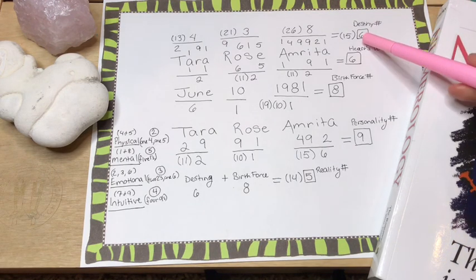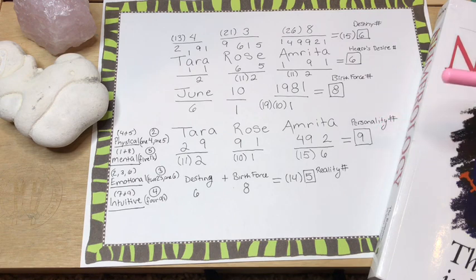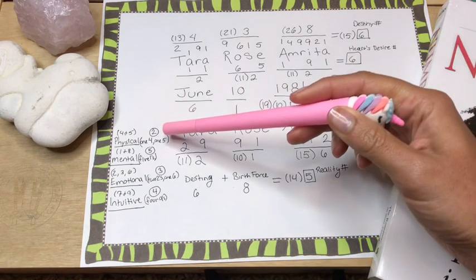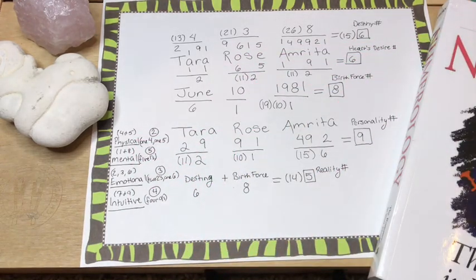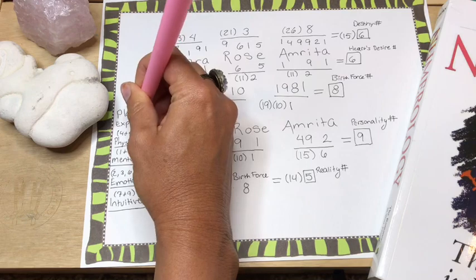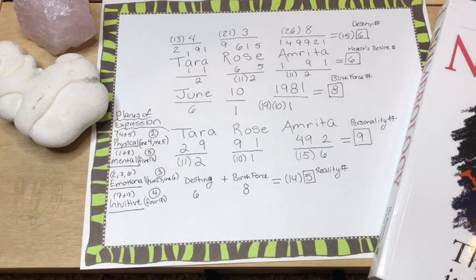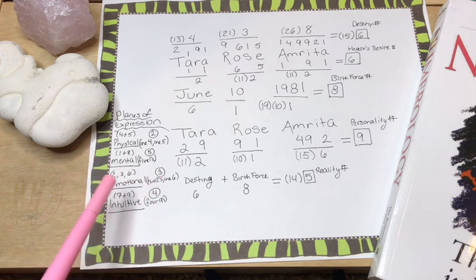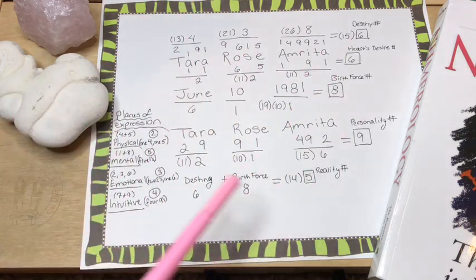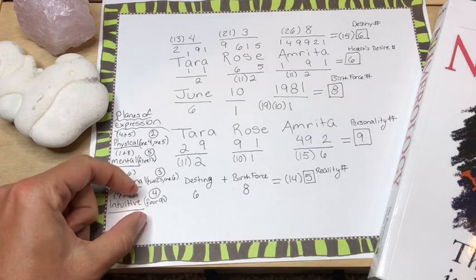So hopefully you guys enjoyed this one. So like I said, in part one, if you were interested in finding out your destiny number, your heart's desire number or birth force number, definitely check it out. Today we found out our personality number. So how others see us. We found out our reality number, kind of what we're going to be driving for or looking for later in life. And we found our planes of expression.